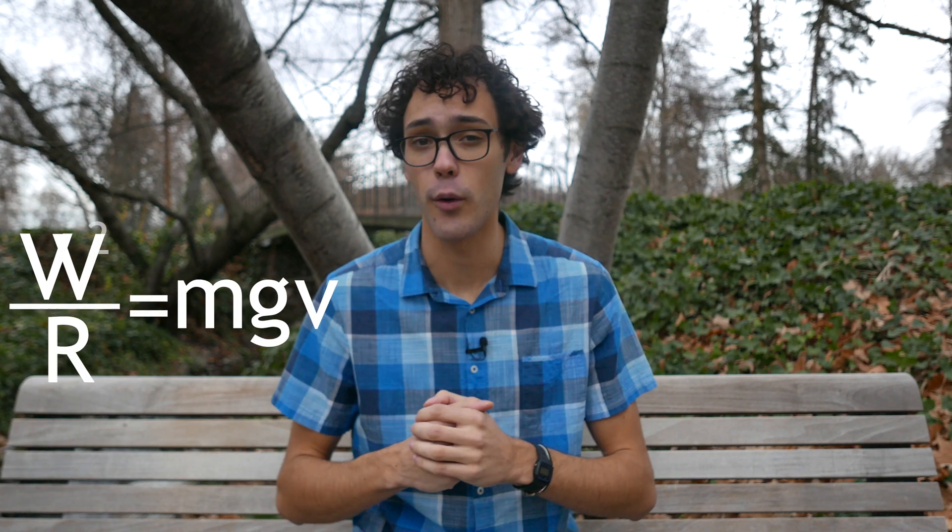So how do we go about measuring these variables here? Well, current, it turns out, is also difficult to measure exactly. But by using Ohm's law, we can sub it with voltage over resistance.